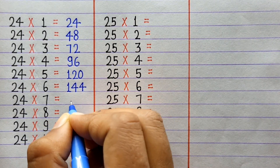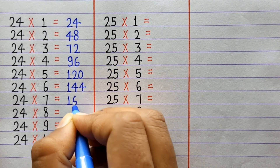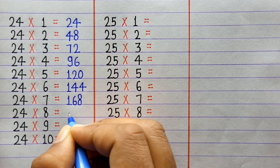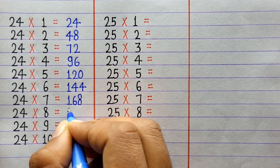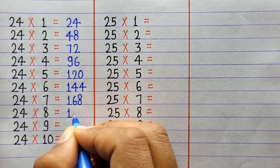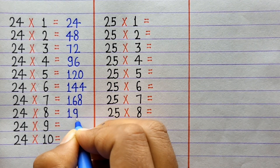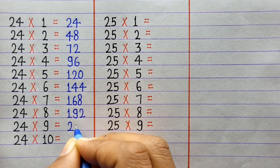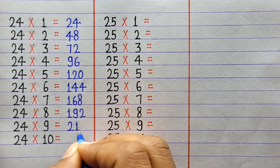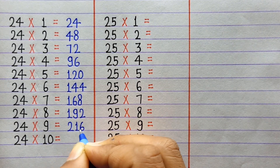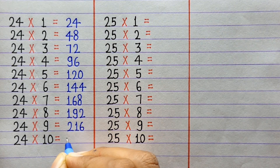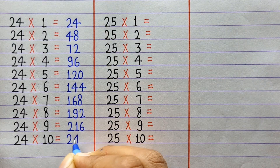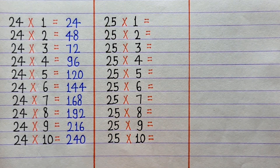24×7=168, 24×8=192, 24×9=216, 24×10=240.